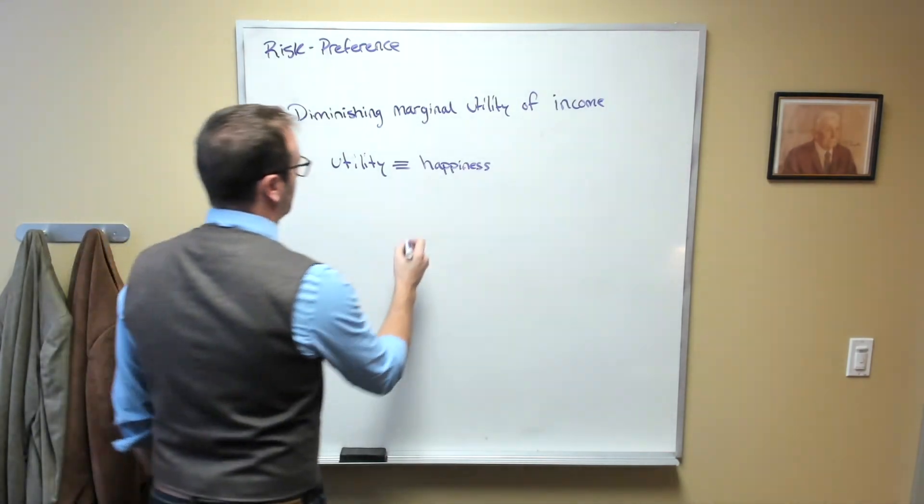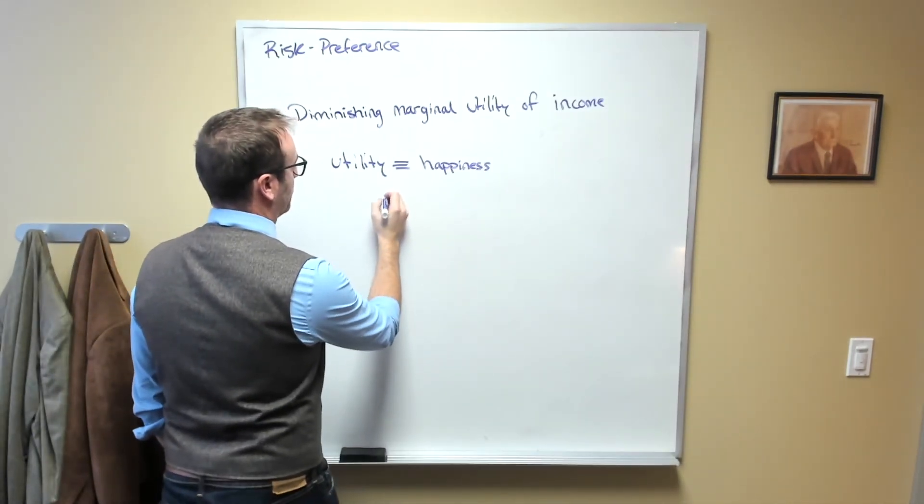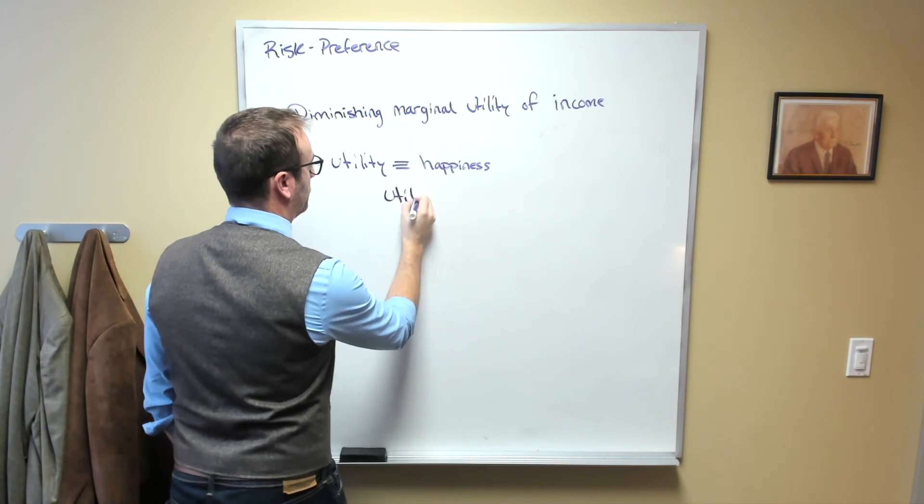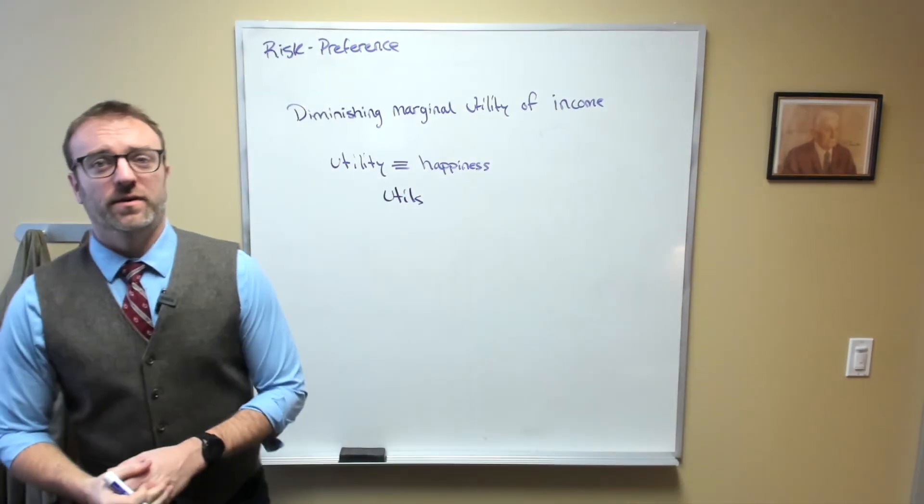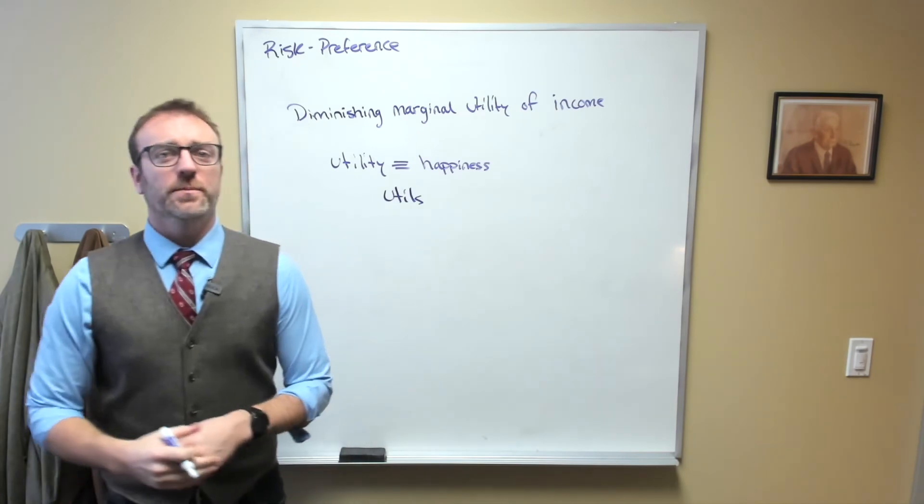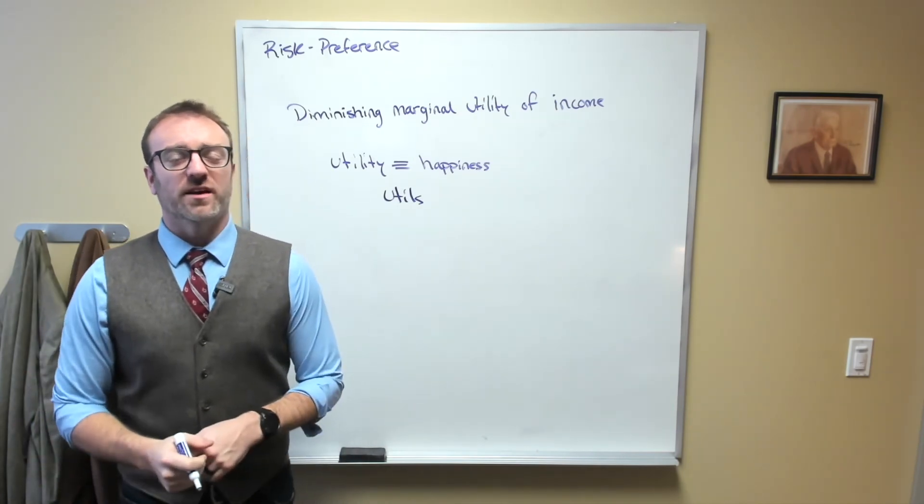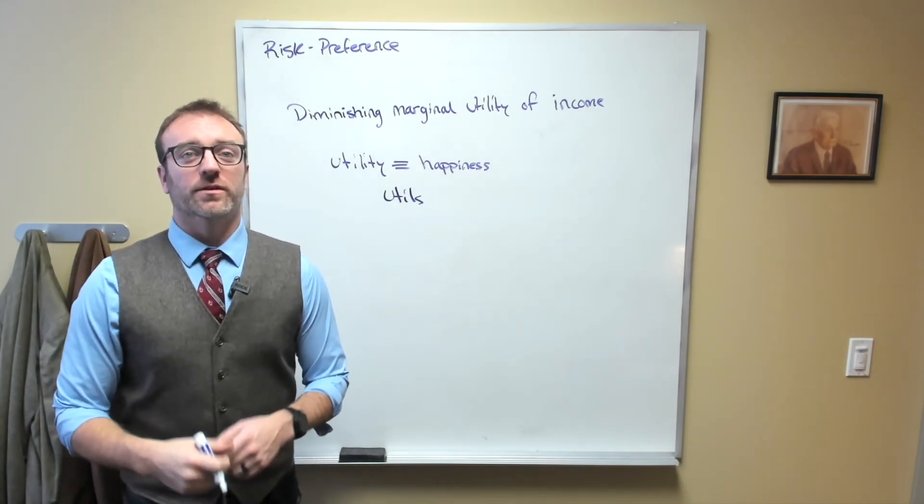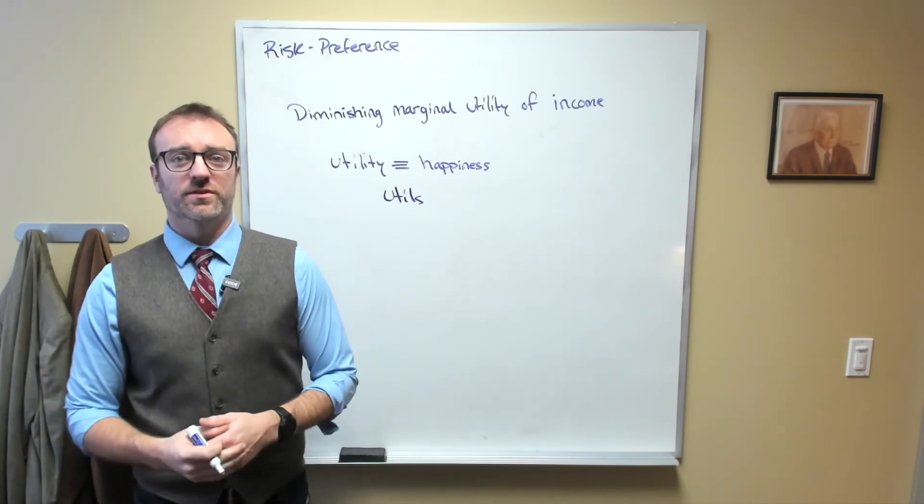Now, we express utility as a unit called utils. The more utils you have, the happier you are. So what diminishing marginal utility of income says is that each additional dollar gives you fewer utils than the dollar before it.